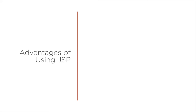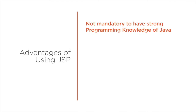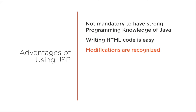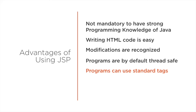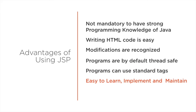Now let us understand the advantages developers will get using JSP. To develop a JSP program, it is not mandatory that the developer should have strong programming knowledge. Writing HTML code in a JSP program is easy and similar to HTML. Modifications done to the JSP are recognized automatically and changes will take effect immediately. JSP programs are by default thread safe and can use standard tags. We can create our own custom tags using the tag extension API, and with reusable tag libraries, the amount of code needed to write powerful web applications greatly reduces. JSP is easy to learn, implement, and maintain.